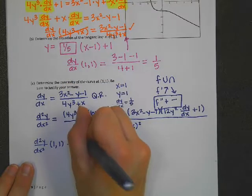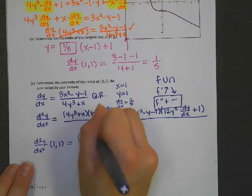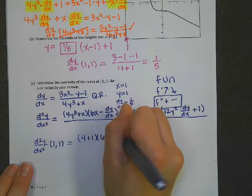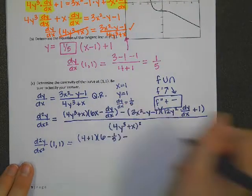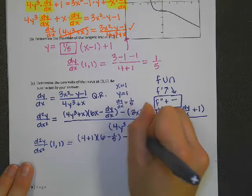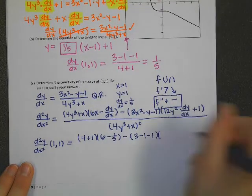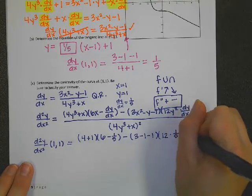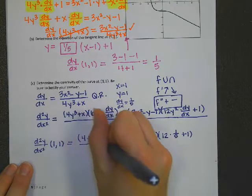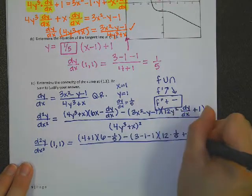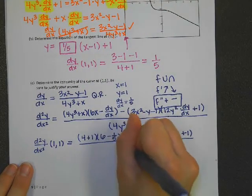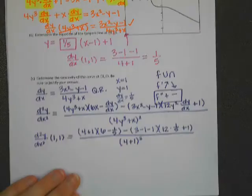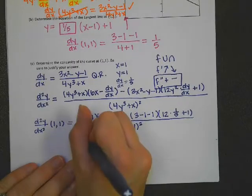So I would have (4 plus 1) times (6 minus 1) minus (3 minus 1 minus 1), 12 times 1/5 plus 1, all over (4 plus 1) squared. So I'm going to plug that in here and clean this up a little bit.